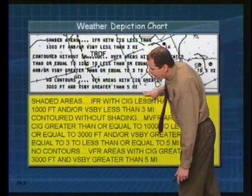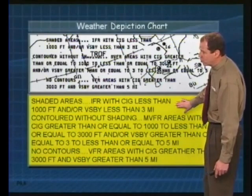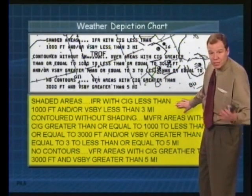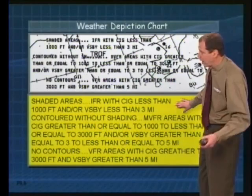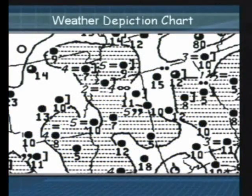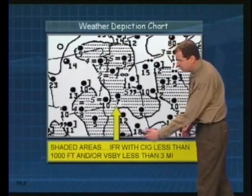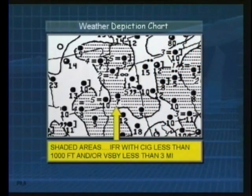You can see shaded areas — those are IFR, with ceilings less than 1,000 feet and/or visibilities less than 3 miles. Now, if you see some contoured areas that are not shaded, you're looking at marginal VFR areas. Take a look at this — it's all shaded in, indicating an IFR area: ceilings less than 1,000 feet and/or visibilities less than 3 miles.